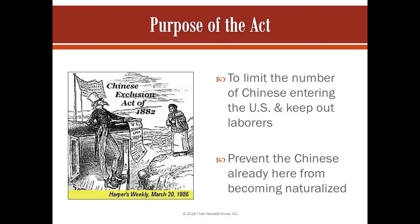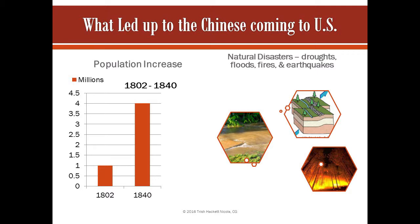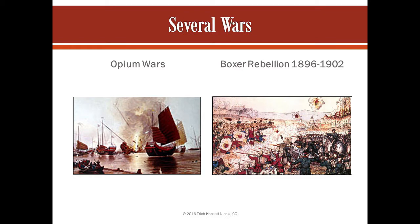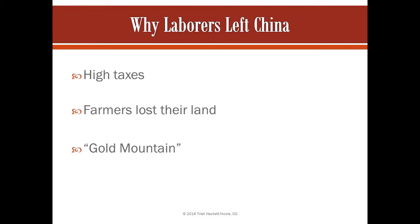The purpose of the act was to limit the number of Chinese coming into the United States and to prevent the Chinese that were already here from being naturalized. There were several things that led up to the Chinese coming to the United States. The 19th century was very chaotic in China. Between 1802 and 1840, the population increased 300 million people to make it a total of 400 million. China's Great Recession started in 1838 and lasted a century. There were floods, earthquakes, fires, and drought that brought further devastation to the country, and there were several opium wars. The Chinese government imposed high taxes on the peasant farmers, and they were unable to pay the taxes and lost their land.